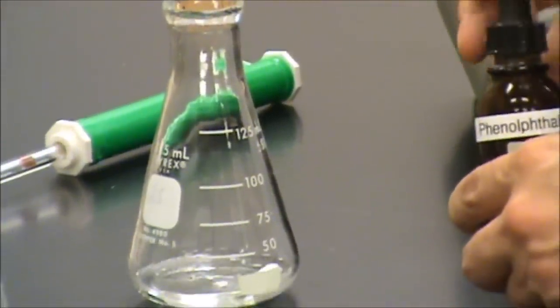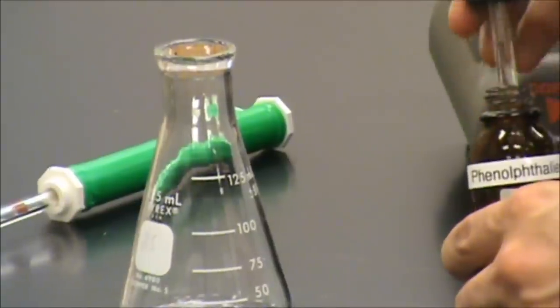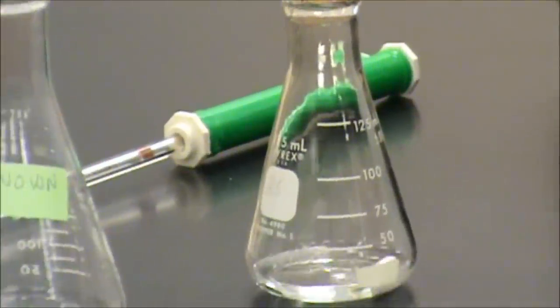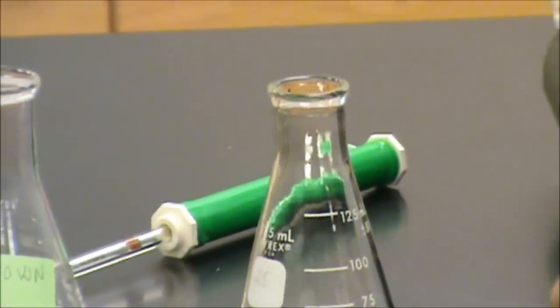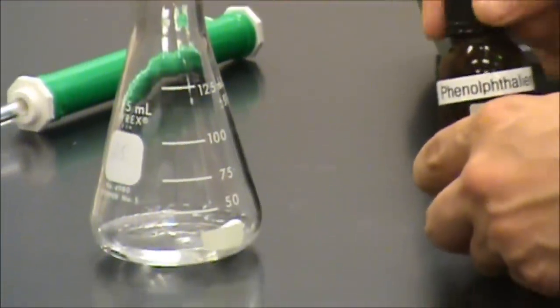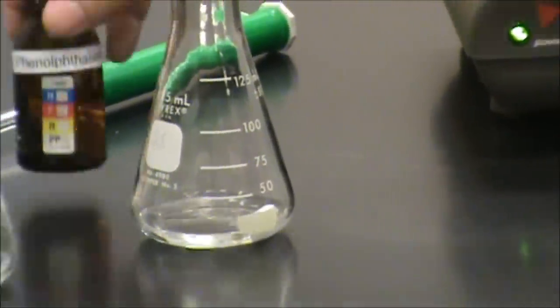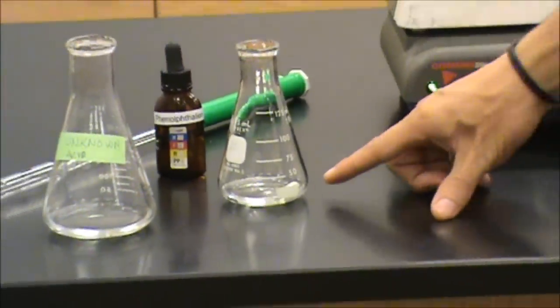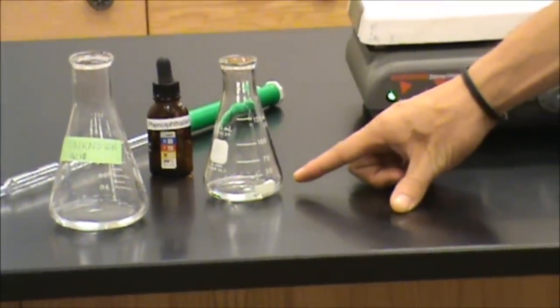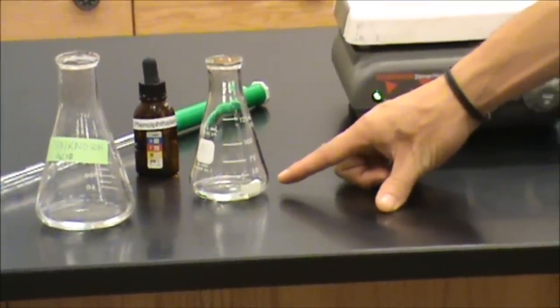The indicators will come in dropper bottles such as these. We want to add the amount of drops indicated by the procedure. Generally, just a few drops are required. For this particular indicator, you'll notice that it's colorless, but we will see a dramatic color change when we reach the end of the titration.